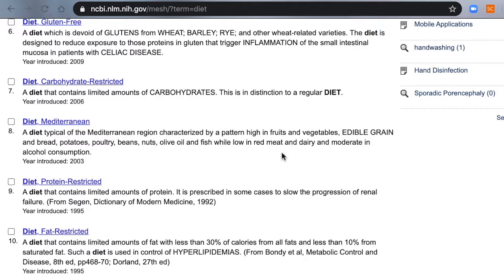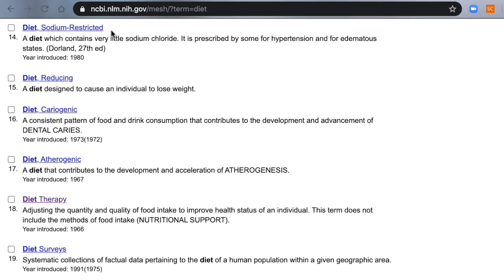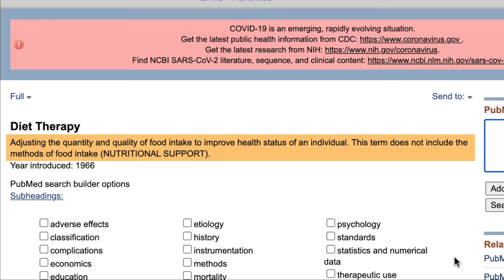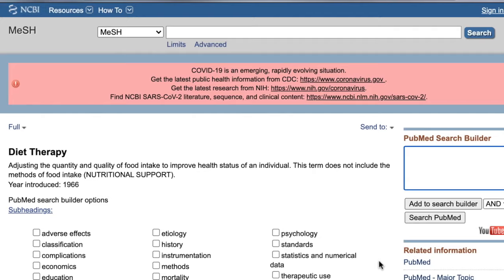It's worth scrolling through this list as you might find more appropriate MeSH to use than the first few results. For example, if we were focusing on low sodium diets, we could use diet, sodium restricted. Instead, let's click on the heading diet therapy. This heading is defined as adjusting the quantity and quality of food intake to improve health status for an individual, which makes it a good choice for our topic. Again, I'll click on the add to search builder.